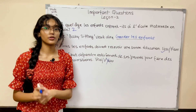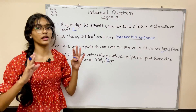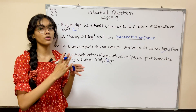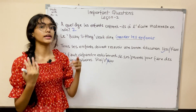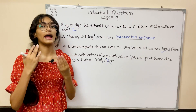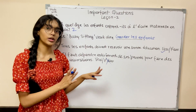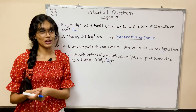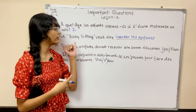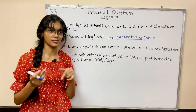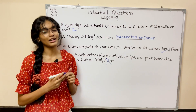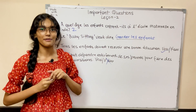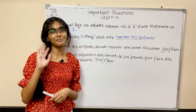That was all from this chapter. The most important questions are about the education system — at each level, what diploma do we get, at what age do we enter, and how many years we spend. Give more importance to France. I hope this chapter is now clear. The PDF with all questions and answers is in the description box. Don't forget to hit the like button, share this video and subscribe to my channel. I'll see you in my next one. Take care and bye-bye.